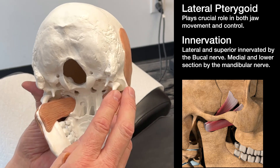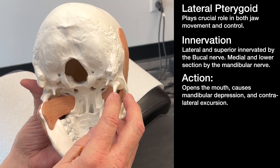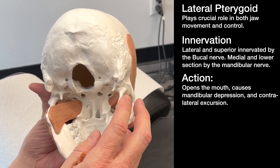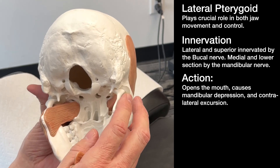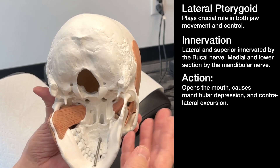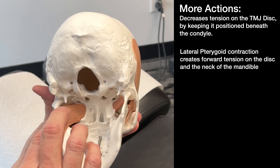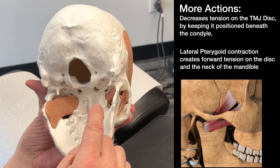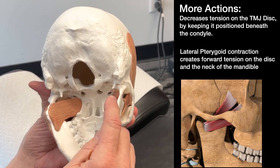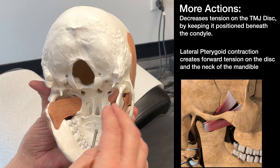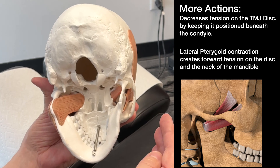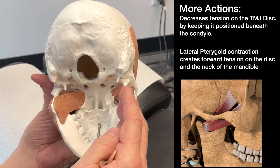The lateral pterygoid has quite an interesting action, and there is some controversy in the literature about it. What most authors agree on is that it opens the mouth, causes mandibular depression and contralateral excursion — especially while chewing food. Another noted function is decreasing tension on the temporomandibular disc by keeping it positioned beneath the condyle. Lateral pterygoid contraction creates a forward tension on the disc and the neck of the mandible.